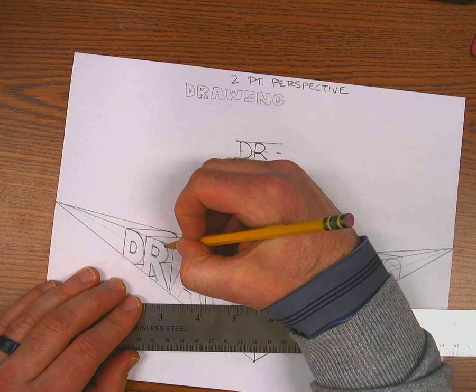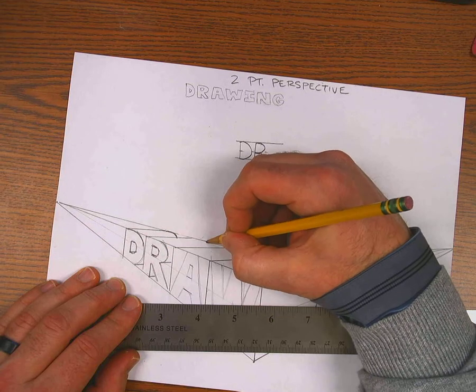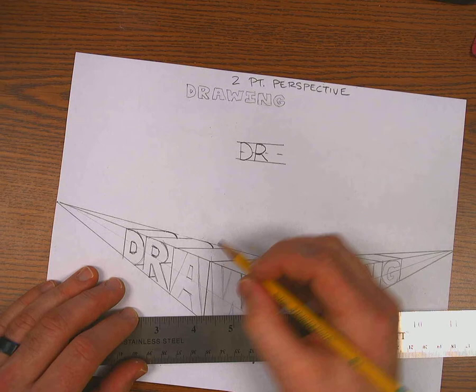Same thing on this R here. By halfway over, it starts to curve down. So in the back, about halfway over, I'm just going to start to curve and stop when I hit the next letter.